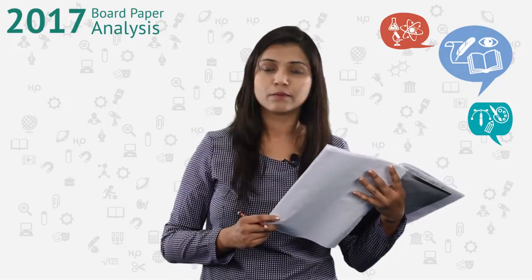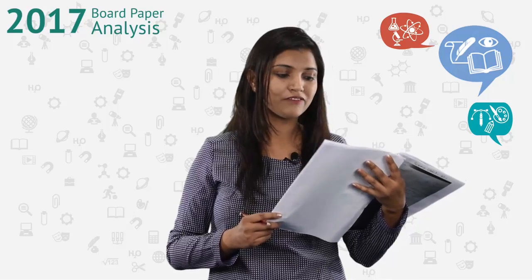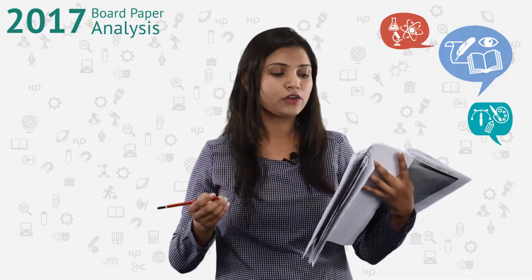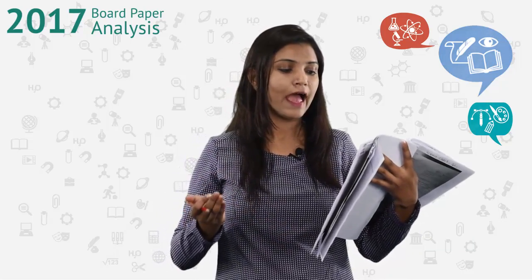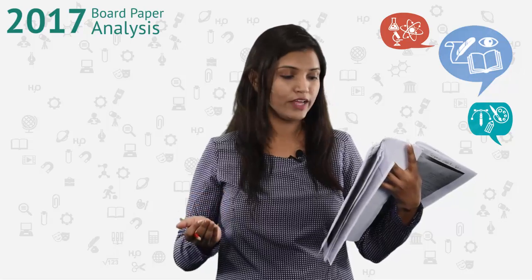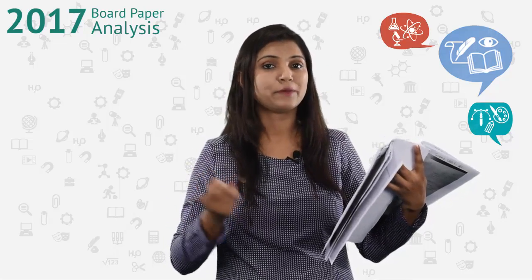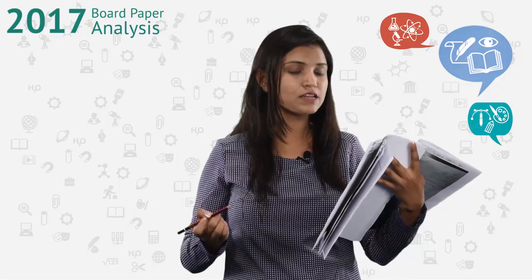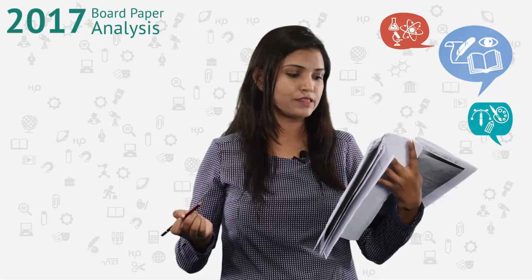Question 10 talks about two elements, P and Q. P has atomic number 20 and Q has atomic number 17. We need to find out the address of each element. Using the Bohr-Bury rule, element P is calcium and element Q is chlorine. You can find the address by considering the number of shells and valence electrons, and then you need to make one compound from these two elements — CaCl2 will be the answer.